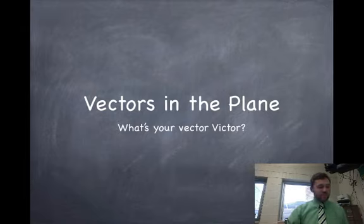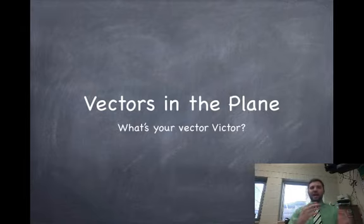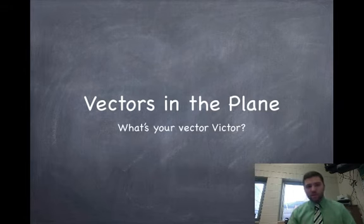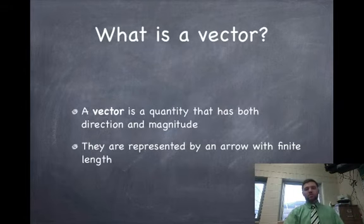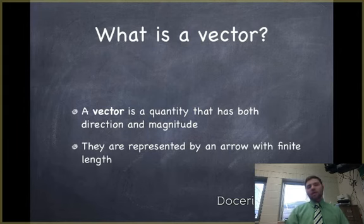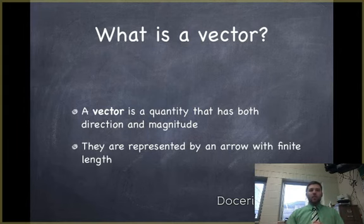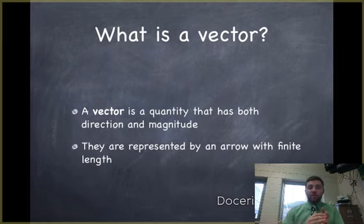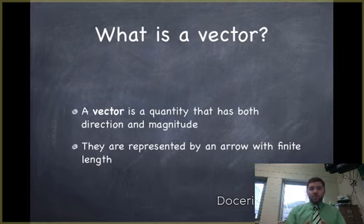Vectors in the plane. When we say vectors in the plane, we simply mean vectors in the xy-axis, the coordinate plane. So let's get right into it. Vectors in the plane — what is a vector? A vector — I want you to think about a vector as a shift. It's something that has both direction and magnitude.